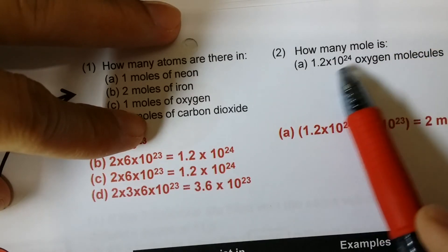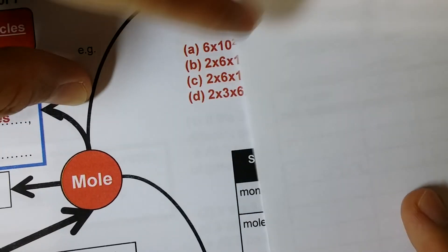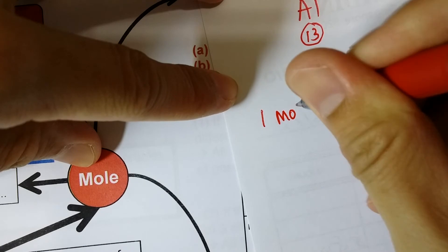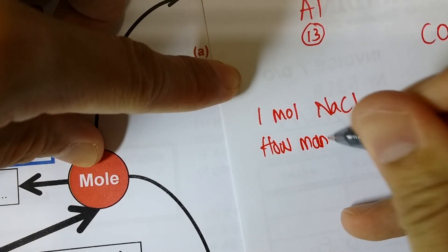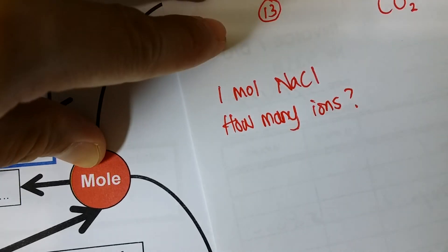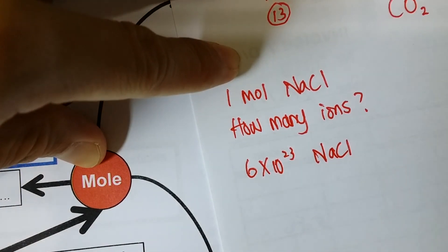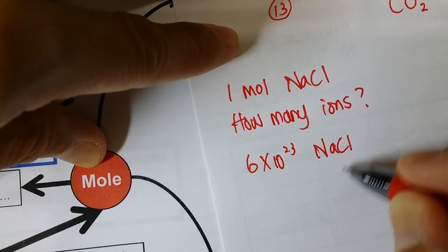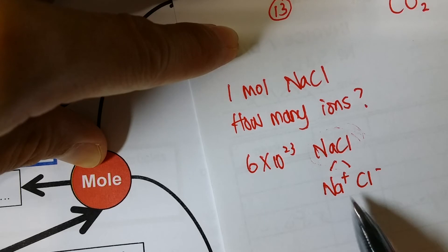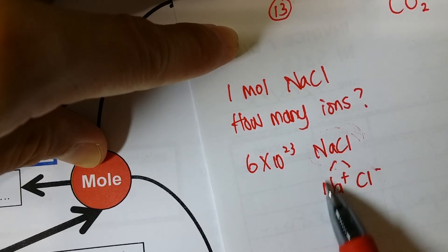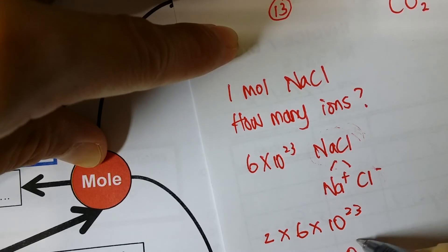To find how many moles, divide the number of particles by Avogadro's number, giving you 2 moles. For example, 1 mole of NaCl: NaCl is an ionic substance, so 1 mole has 6 × 10²³ formula units of NaCl. NaCl consists of a sodium ion and a chloride ion — 2 ions per formula unit. So the number of ions is 2 × 6 × 10²³ = 1.2 × 10²⁴ ions.